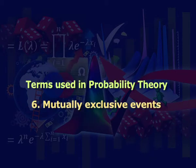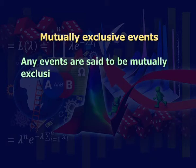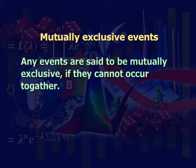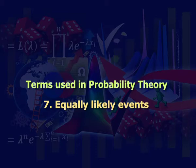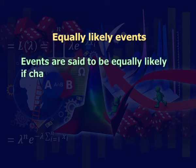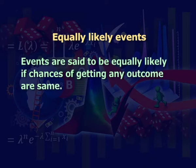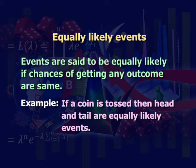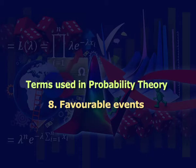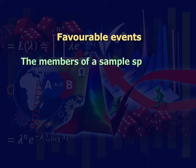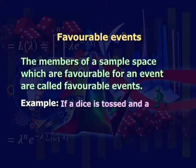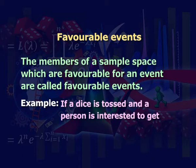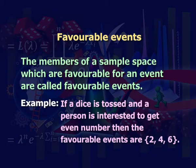Sixth: mutually exclusive events. Any events are said to be mutually exclusive if they cannot occur together. For example, if a coin is tossed, then head and tail are called mutually exclusive events. Eighth: favorable events. The members of a sample space which are favorable for an event are called favorable events. For example, if a die is tossed and a person is interested to get an even number, then the favorable events are 2, 4, 6.